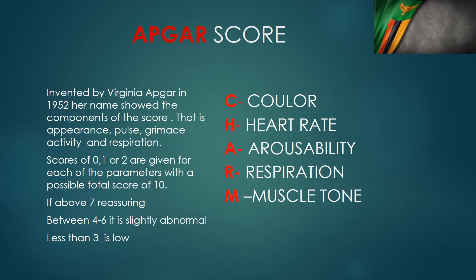APGAR was an anesthesiologist who came up with this APGAR score in 1952. We use her name to remember the parameters. There are five parameters and each of them is scored from zero to two. Since there are five parameters, the maximum each baby can get at birth is ten. I normally use my own mnemonic on the right side which helps me remember how to grade the parameters, so we can go through it.